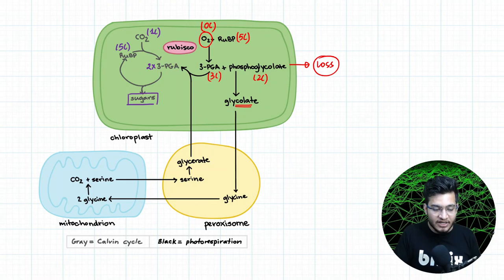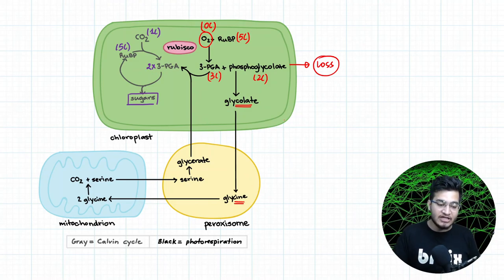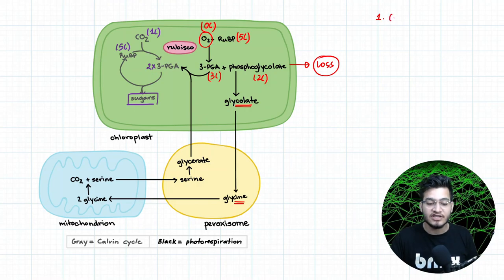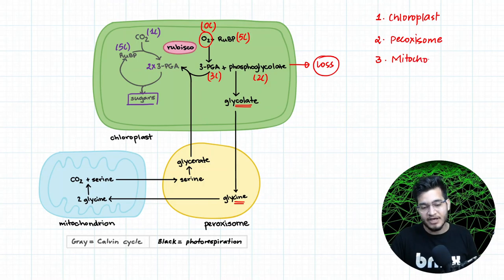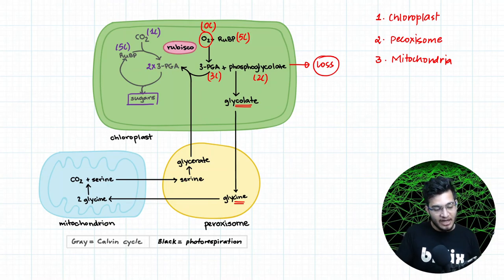This phosphoglycolate can further form glycolate and then the amino acid glycine. This cycle begins in the chloroplast — since we study this in the photosynthesis chapter, and photosynthesis occurs in the chloroplast, this process also starts in the chloroplast. Then it moves to the peroxisome, and third comes the mitochondria. Here, glycine can form serine, and then glycerate, which can in fact make 3-carbon PGA. It is indeed a very long process.